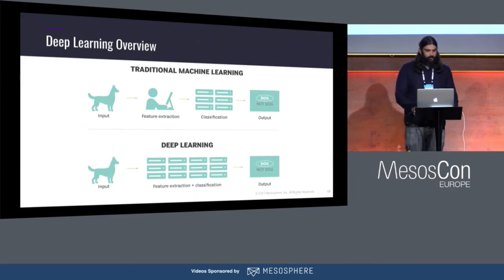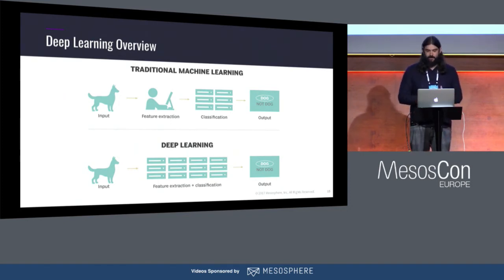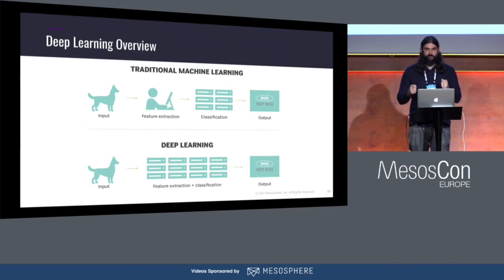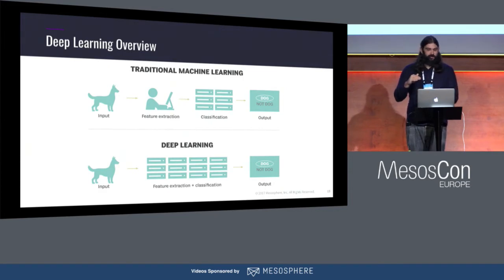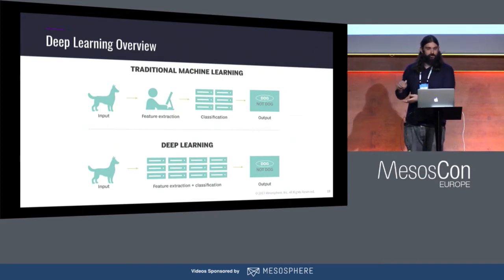With traditional machine learning, if you want to train a model — say, to recognize pictures of dogs — a human would have to look at those dogs and manually mark all the different features: ears, nose, eyes, paws, tail. Those marked features would then be fed to the model so it could look at pictures, find those features, use a neural network to classify them, and output whether something is a dog or not.